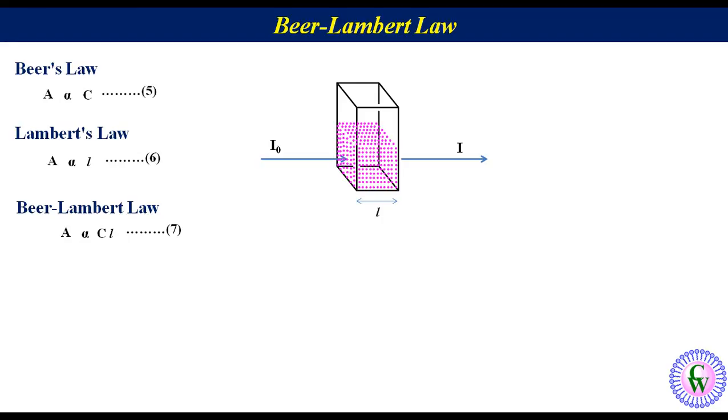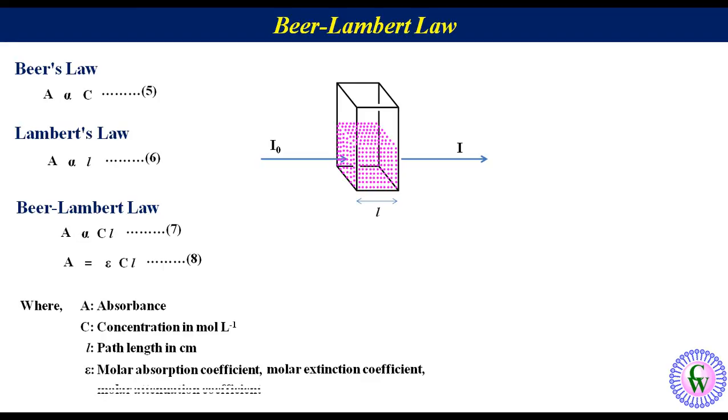After putting proportionality constant epsilon, we will get A is equal to epsilon into C into L. This is equation number 8, called Beer-Lambert law where A is absorbance, C concentration in mole per liter, L path length in centimeter and epsilon is molar absorption coefficient also called molar extinction coefficient, molar attenuation coefficient or molar absorptivity which is a constant for a particular compound at a given wavelength.